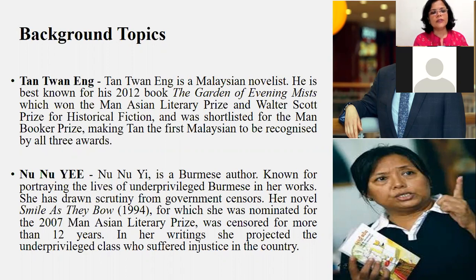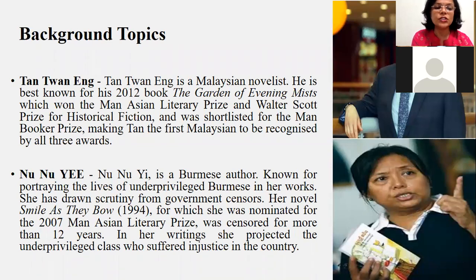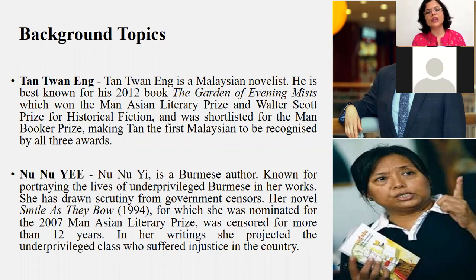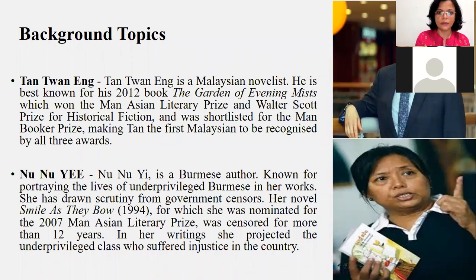In her writings she projected the underprivileged class who suffered injustice in the country. Nunui is a senior writer from Brahmadesh — born in a village named Inwa in Burma in 1959. She has written 15 novels, 100 short stories, and several magazine articles. Her short stories include themes of social injustice and have been censored by the military government. Myanmar gained independence from the British Empire in 1948, and that government censored her works, but she is considered a very bold and dynamic writer.